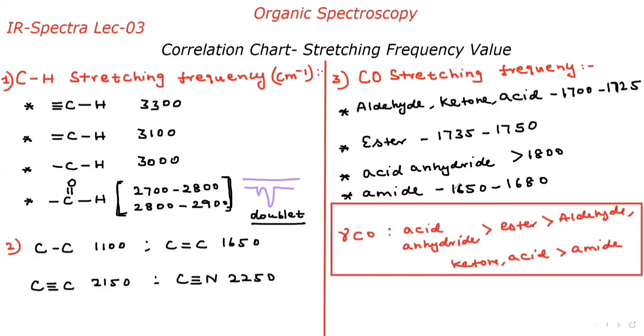Hello everyone, welcome to VJ chemistry. Today we are going to discuss IR spectra lecture 3. In this lecture I am going to discuss the correlation chart. What is correlation chart? The stretching frequency of various functional groups. This lecture is very important for JAM exam and MSc exams because direct questions are asked based on this stretching frequency.